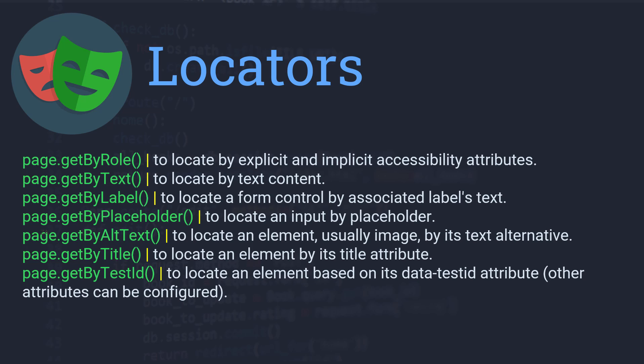Here are some common locators. The first one is `page.getByRole` — using the role you can locate the element. Then we have `getByText`, `getByLabel`, `getByPlaceholder` to locate elements by their placeholder text, `getByAltText` for images using alternative text, `getByTitle` to locate by the title attribute, and `getByTestId` to locate an element based on its `data-testid` attribute, which needs to be defined and configured first.